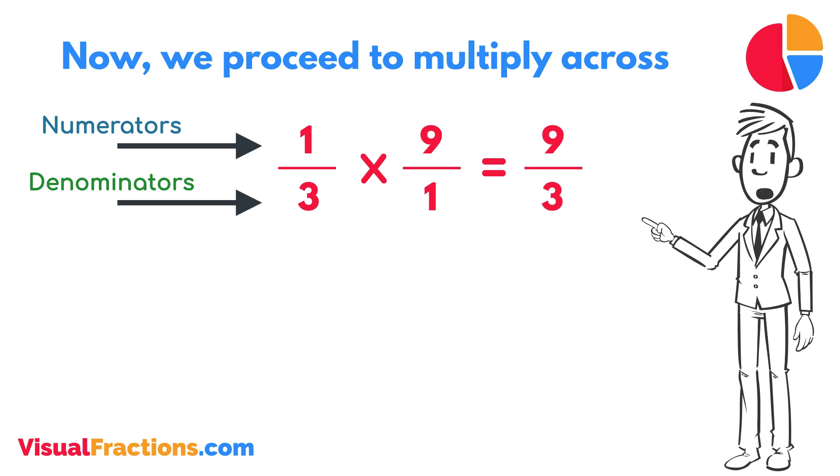We now have a new fraction, nine-thirds. To find the final answer, divide the numerator by the denominator. So, nine divided by three equals three.